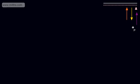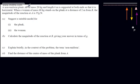In this video, we're going to continue our work with moments and look at another exam-style question. We're told a non-uniform plank AB of mass 20kg and length 6m is supported at both ends so that it is horizontal. When a woman of mass 60kg stands on the plank at a distance of 2m from B, the magnitude of the reaction at A is 35g Newtons. In part A, it says suggest a suitable model for the plank and the woman. The plank will be modelled as a rod, so this isn't going to bend or flex. The woman will be modelled as a particle and her mass will be seen as acting at a central point — she will be small relative to our model.